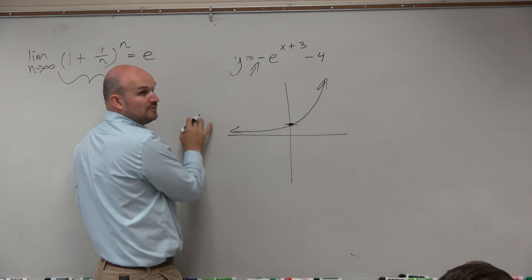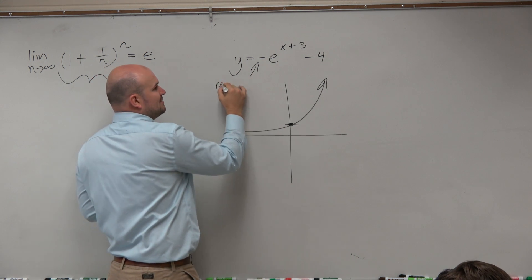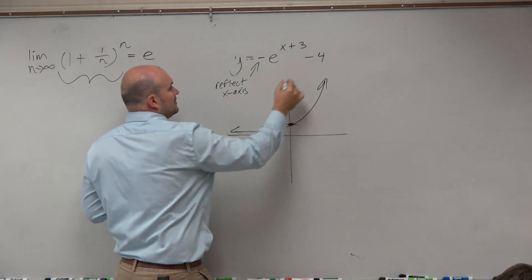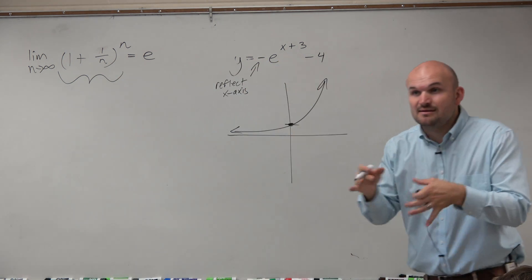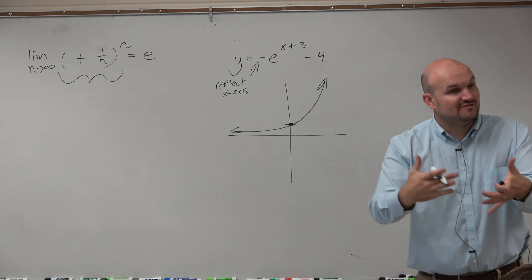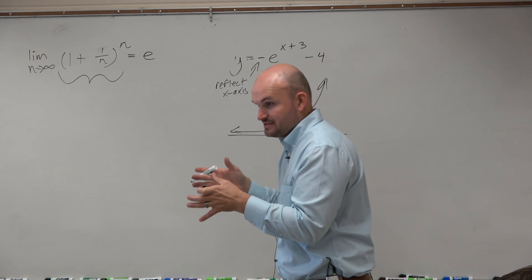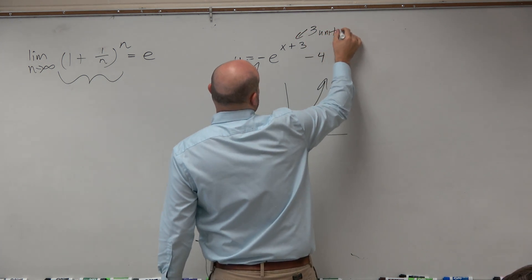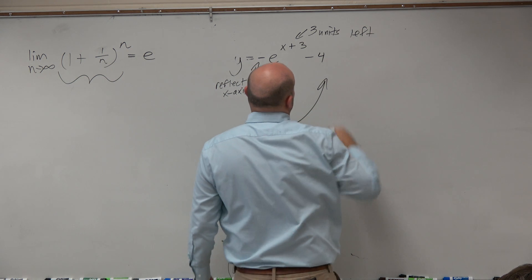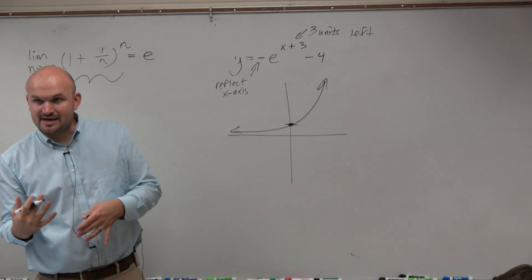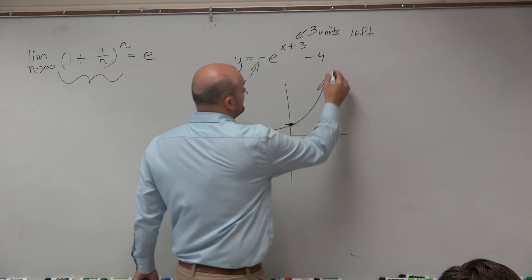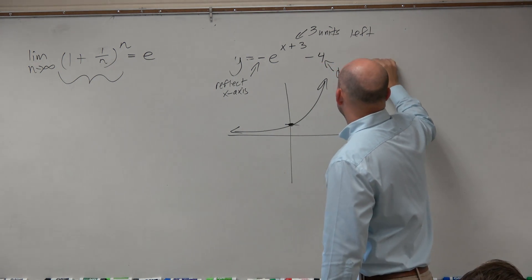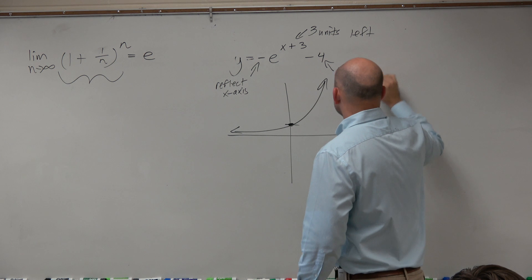So we see here, if you remember, when you multiply by negative on the outside, that's a reflection across the x-axis. When you're adding or subtracting inside the function, that's going to be horizontal shifts. So that's going to be three units left. And then when you add or subtract outside the function, which would be this minus 4, that's going to be a vertical shift. So this is going to be down four units.